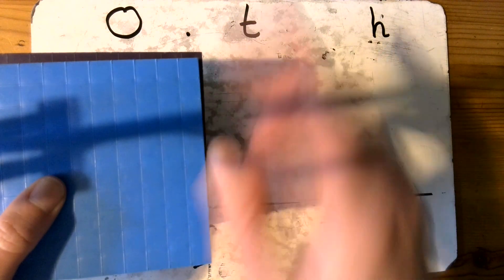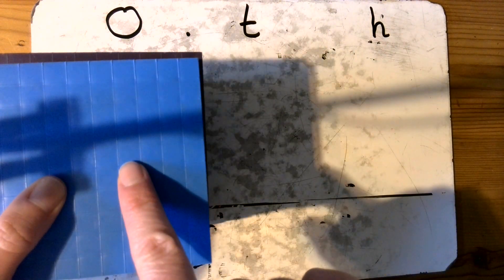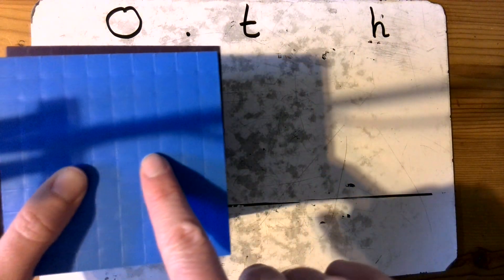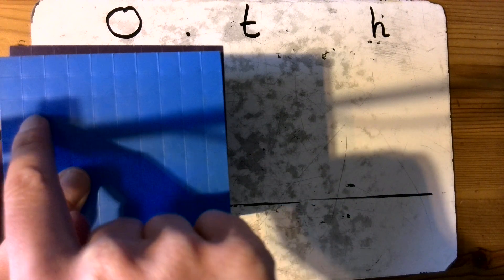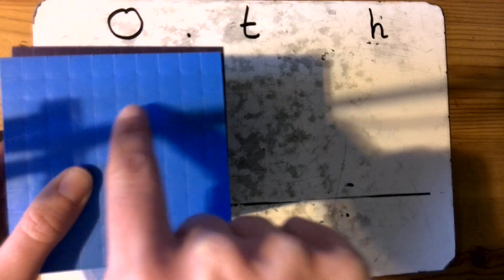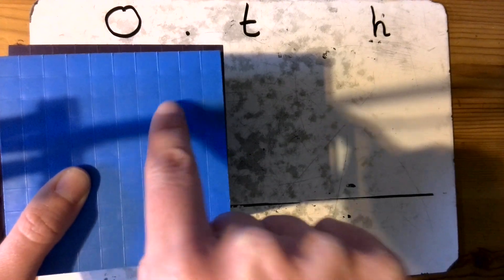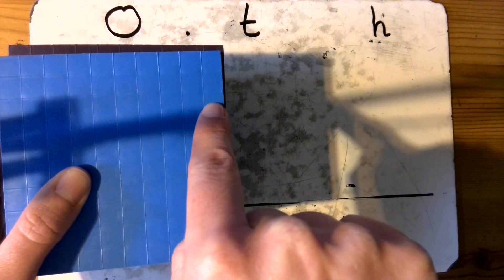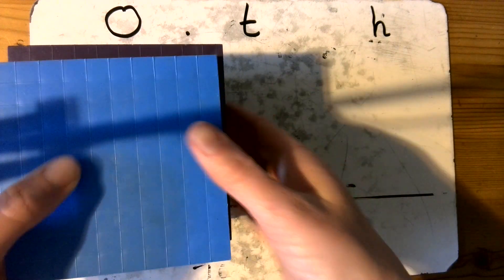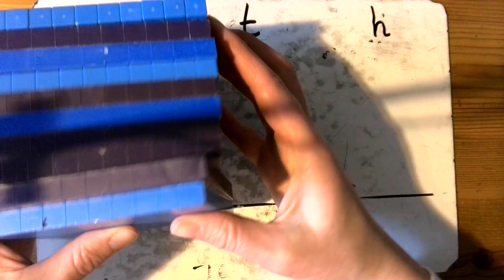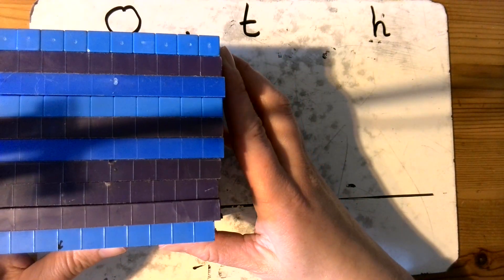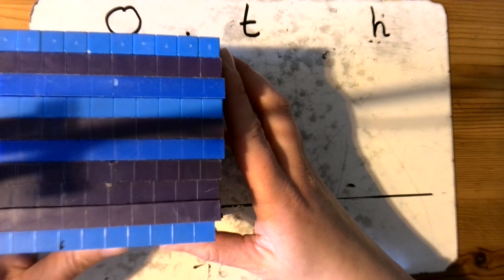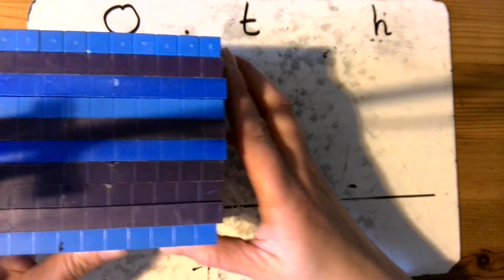So you can see here that we've got our tenths on top, and each tenth is made out of one, two, three, four, five, six, seven, eight, nine, ten. So here I have ten tenths, each worth ten hundredths.